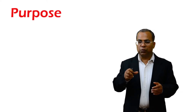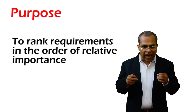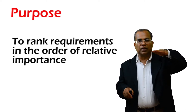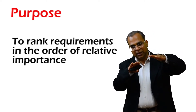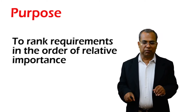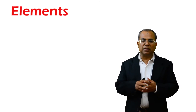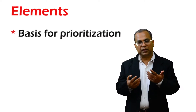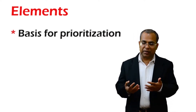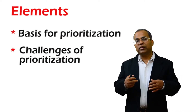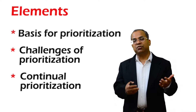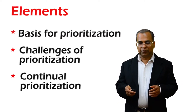As part of this task, we rank requirements in order of relative importance, so that requirements which appear at the top of the list are higher priority than those at the bottom. There are three elements to think about: first, the basis for prioritization — on what basis we prioritize requirements; second, what are the challenges we face in prioritization; and third, how do we ensure continual prioritization.